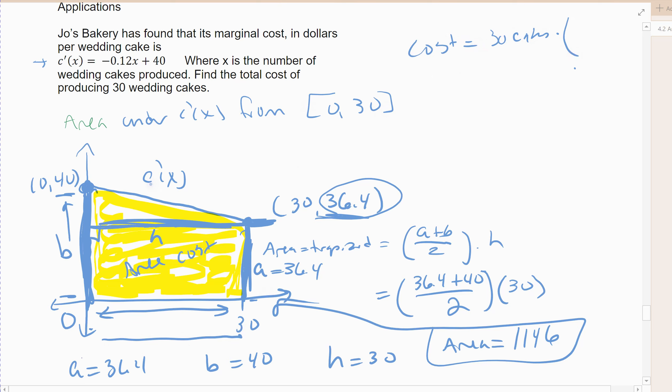Because the cost would be taking the number of units, so it would be 30 cakes, times the derivatives, which is the dollars per cake. So the cake part cancels out, and so the cost is that area, which is 1,146.